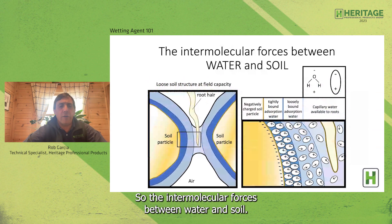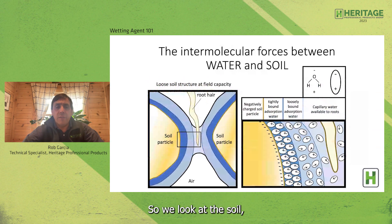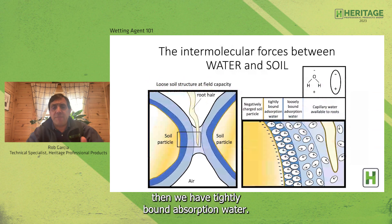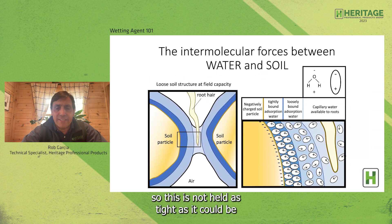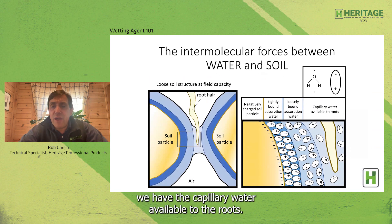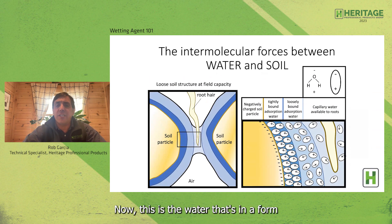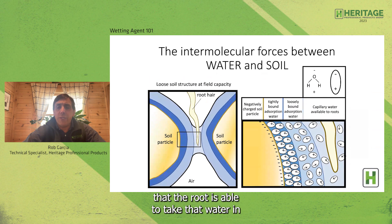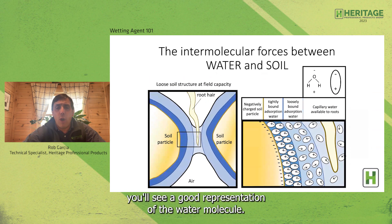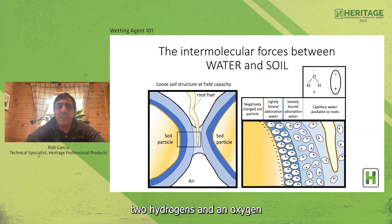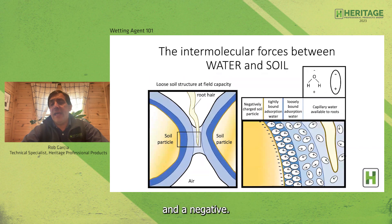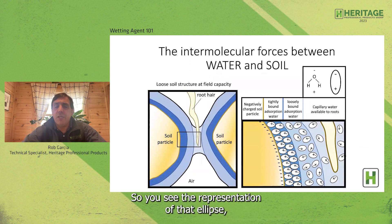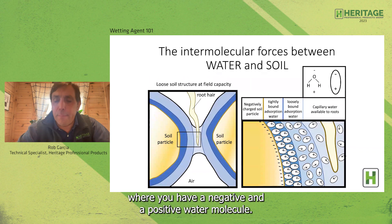Looking at the intermolecular forces between water and soil: we have a negatively charged soil particle, with tightly bound absorption water on its surface, then a layer of loosely bound absorption water, and outside of that, capillary water available to the roots — the water held loosely enough that the root is able to take it in and translocate it through the plant. Because water is H2O — two hydrogens and an oxygen — we create a polar molecule. We have a positive hydrogen part and a negative part, with electrons being pulled towards the oxygen, creating a negative and a positive water molecule.